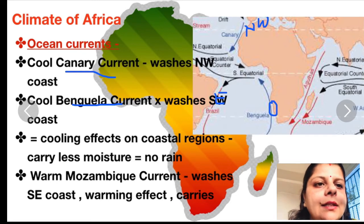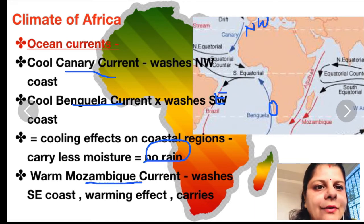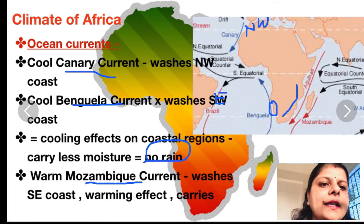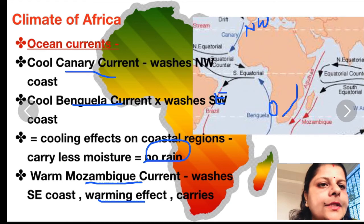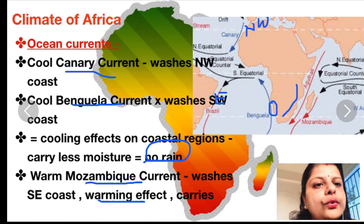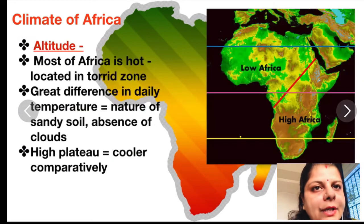The warm Mozambique current washes the southeastern coast of Africa. This current has a warming effect on the coastal region and it carries moisture, so it brings rainfall to the southeastern coastal regions.